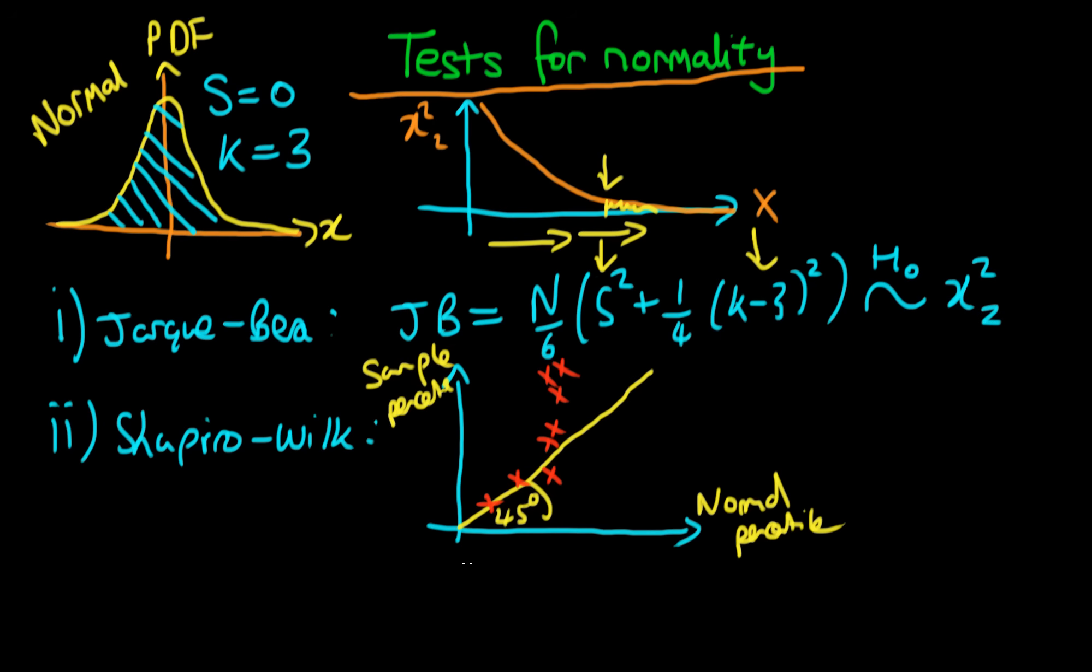The final test is actually a more general test, but you can use it to test for normality. It's called the Kolmogorov-Smirnov test. The idea with the Kolmogorov-Smirnov test is it's not massively dissimilar to that of the Shapiro-Wilk test.